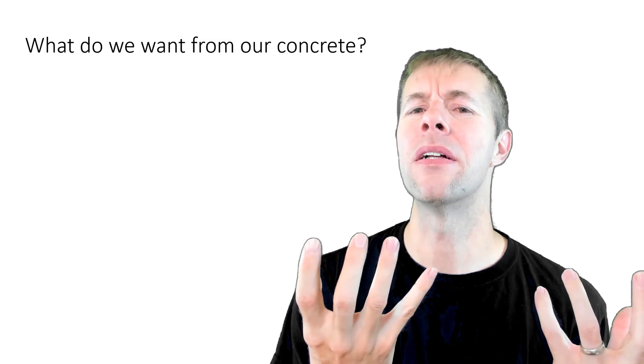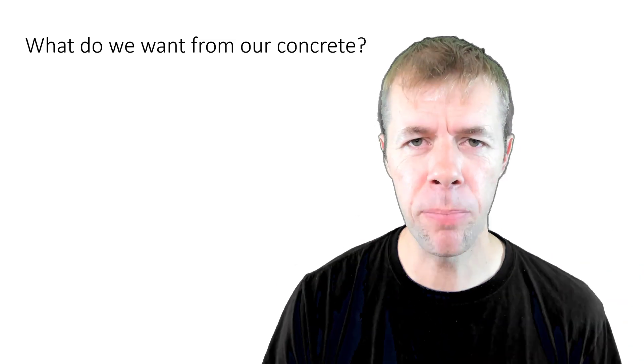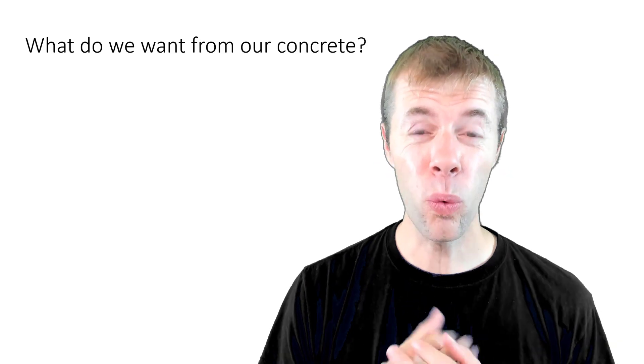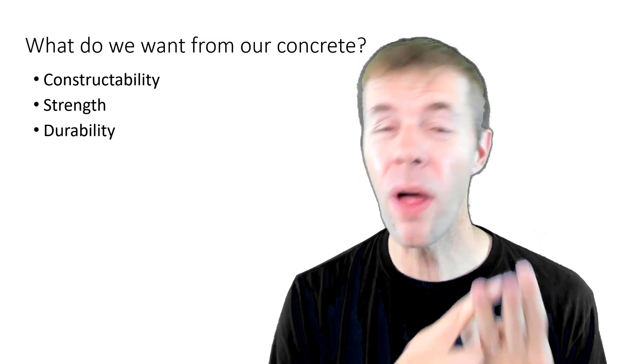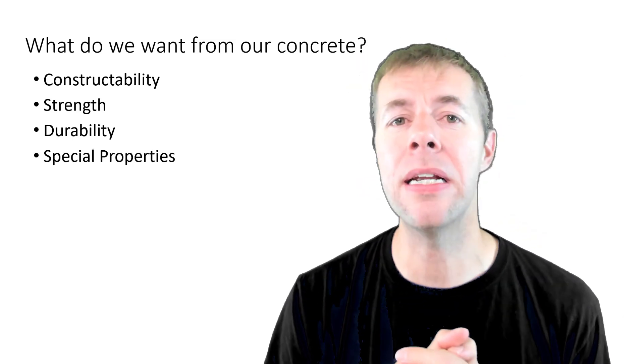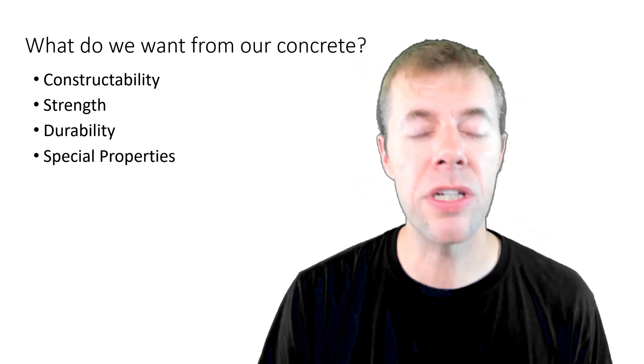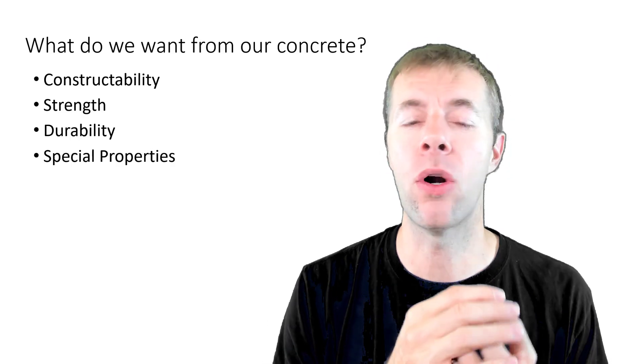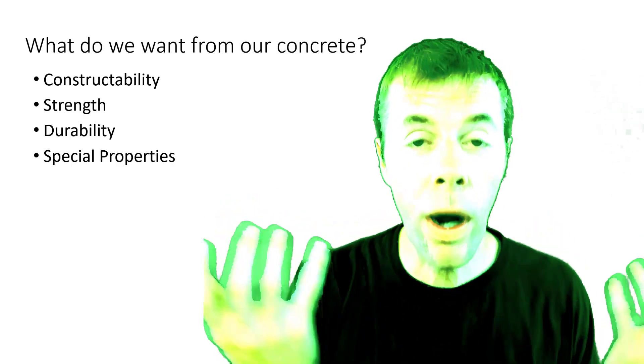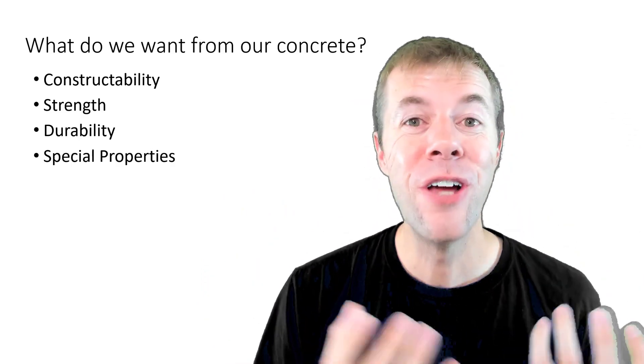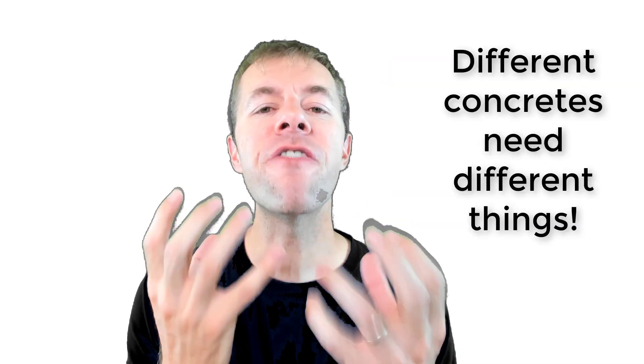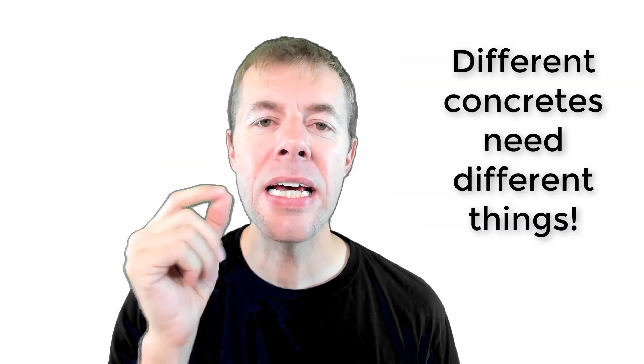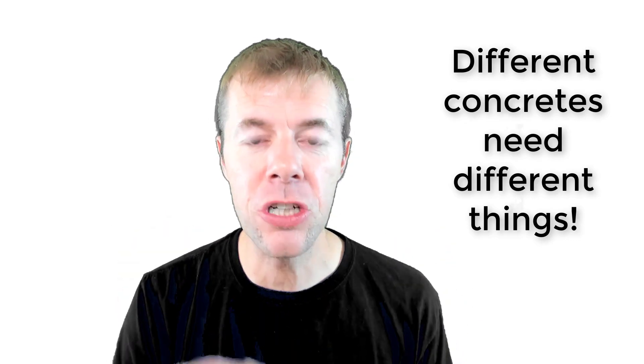So what do we really want from our concrete? I think that's an important question. And I think we need constructible concrete that's strong enough, that's durable, and then occasionally I may need some special properties like skid resistance or super flat or maybe I want it to be green. Why not make the color green or you can make it sustainable? That may be some kind of special property. But different elements need different things. Different concretes for different applications need different things.